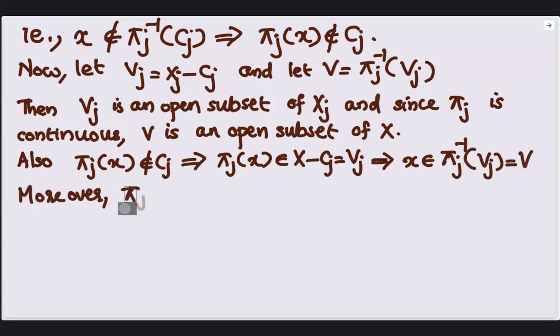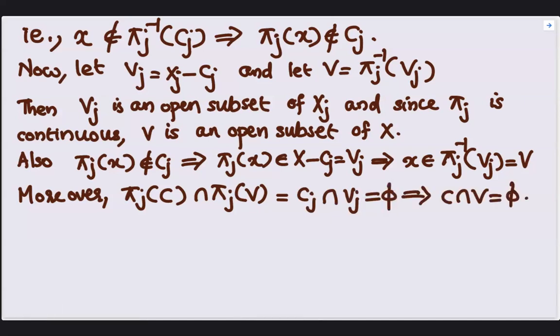Moreover, pi_J of C intersection with pi_J of V is equal to C_J intersection with V_J, and that is equal to phi. Therefore, C intersection V must be equal to phi.